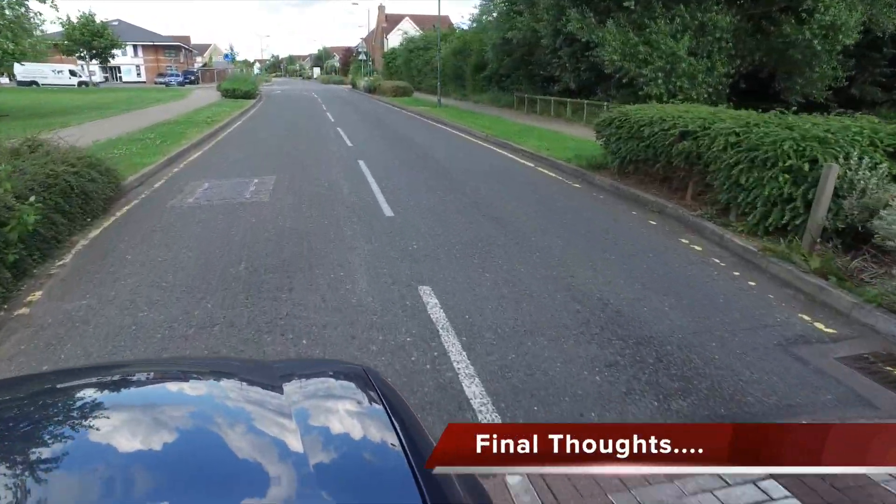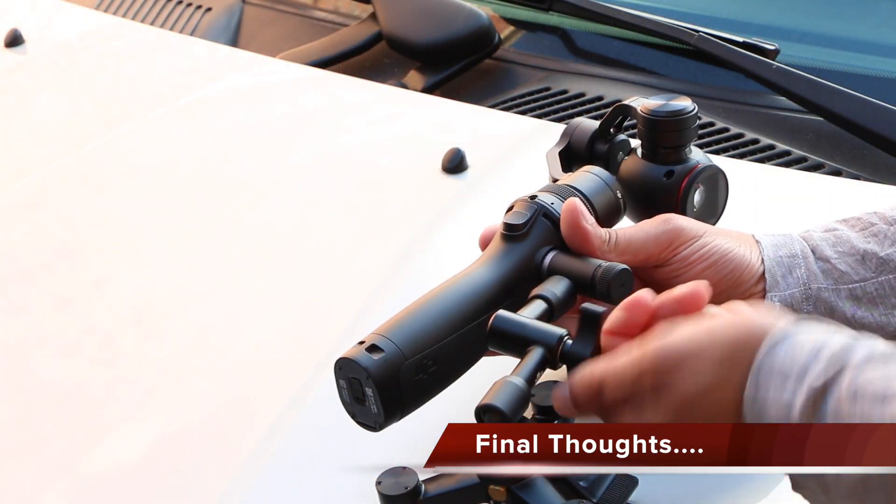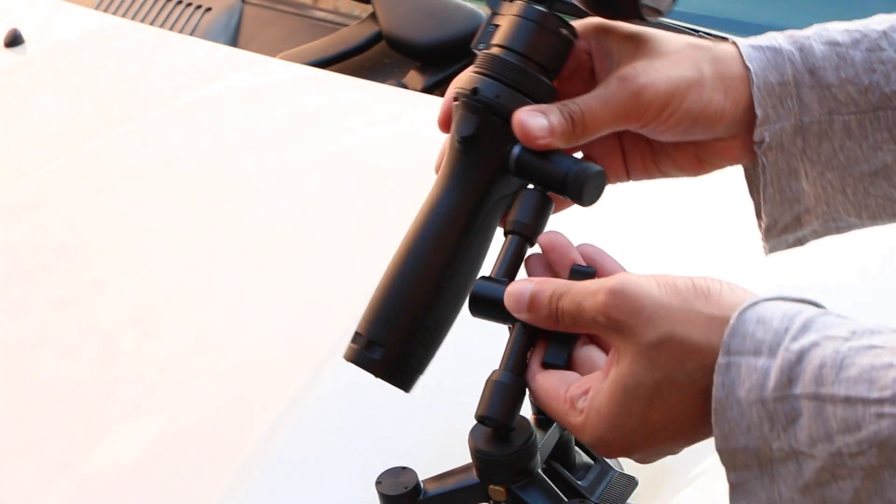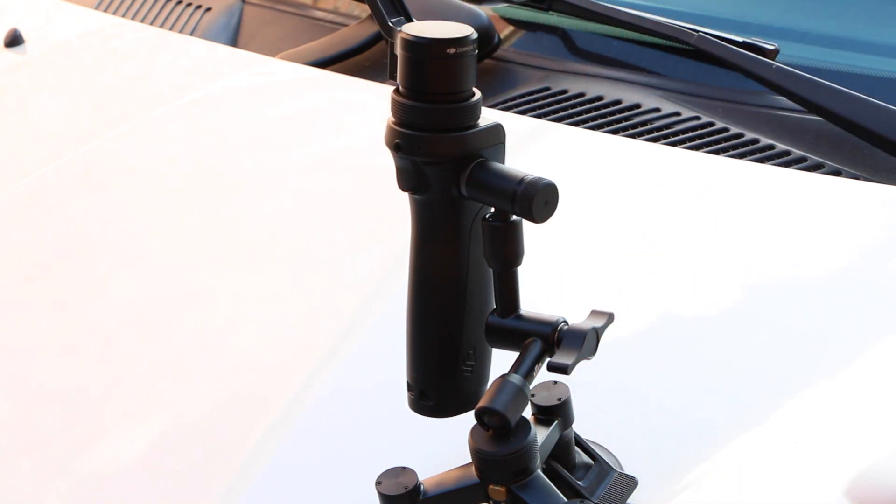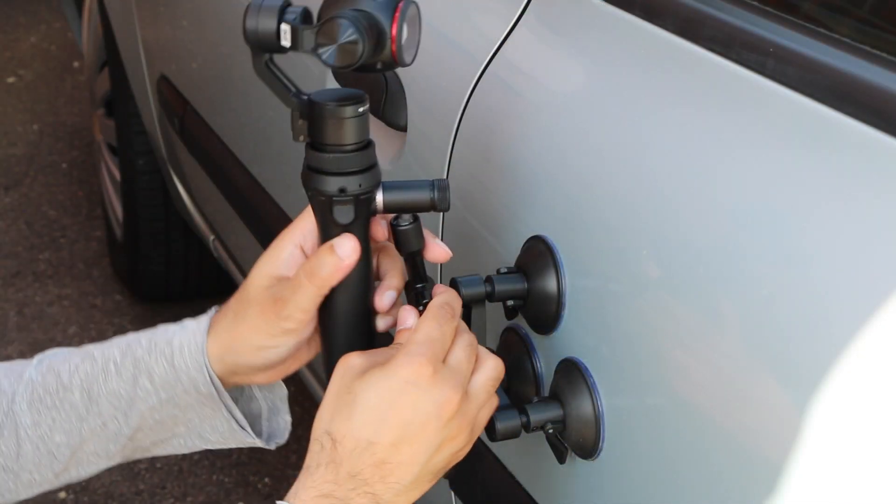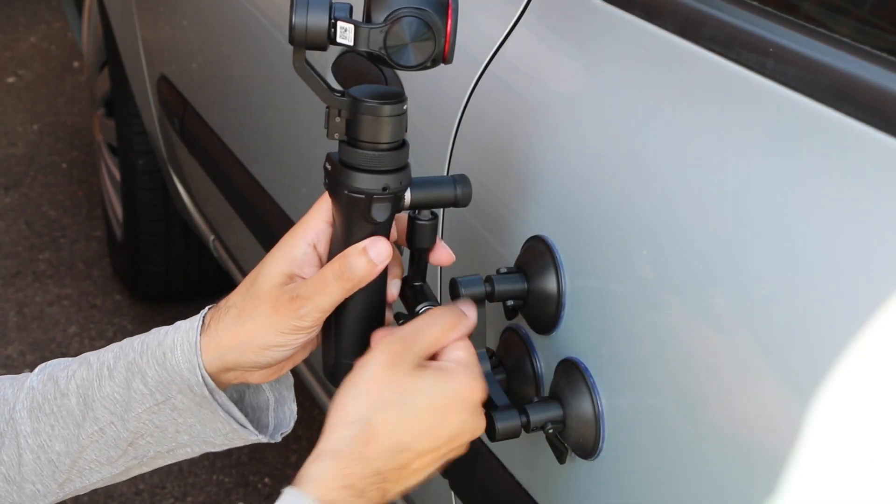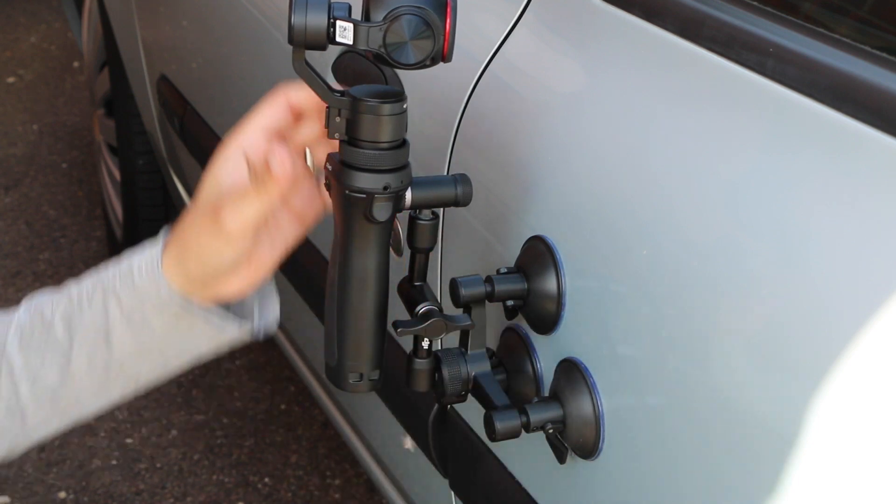So as it stands, the DJI vehicle mount does a fantastic job. With a seriously robust and strong overall design, yet providing complete ease of use with a single thumbscrew loosening the structure, allowing reorientation in any direction, as well as those quick attached suction cups, DJI have pulled out the stops and done it yet again.